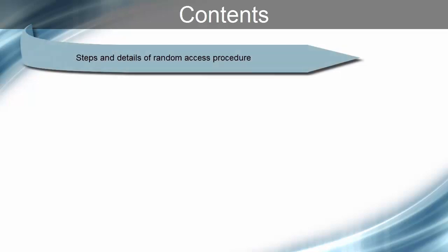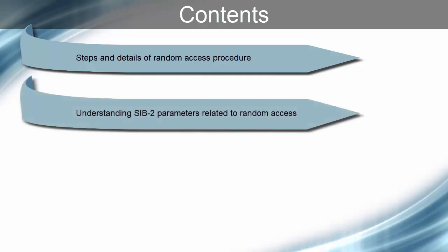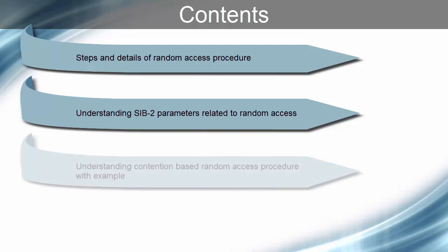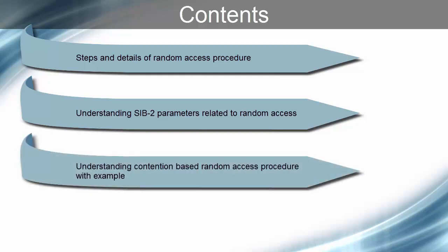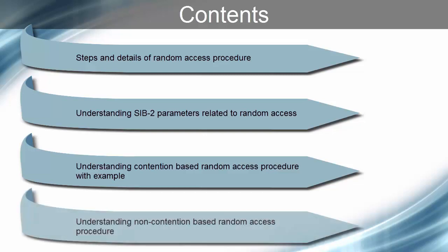Here is the break up of the topics for this video. We will see all the steps and details of the Random Access Procedure. While understanding Random Access, we will see how SIB2 parameters related to Random Access are used by UE. We will take an example of preamble collision to understand contention based Random Access Procedure. We will also see what is non-contention based Random Access and how it is different from contention based Random Access.